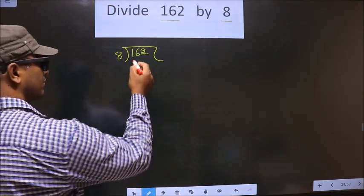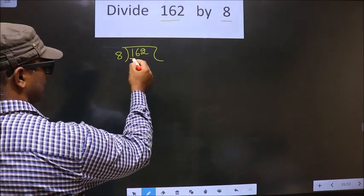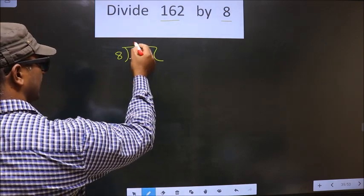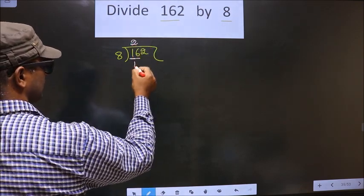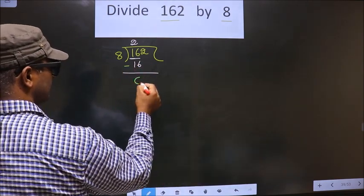Now, here first number is 1. 1 is smaller than 8. So, we should take two numbers, that is 16. When do we get 16 in 8 table? 8 times 2 is 16. So, now you subtract. You get 0.